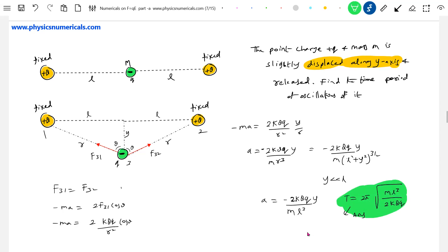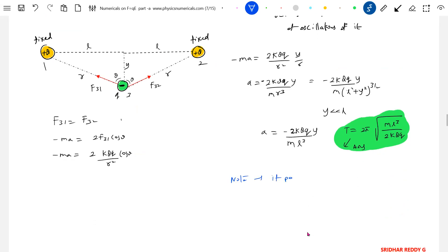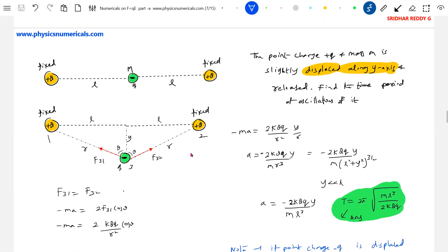Some very good questions will involve SHM - you just have to understand the condition available. But if it is displaced horizontally, it will not exhibit SHM, it will be rectilinear motion. A very important thing: note that if point charge q is displaced along the x-axis and released, it will describe rectilinear motion.